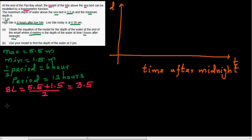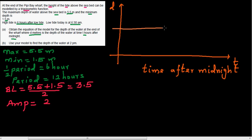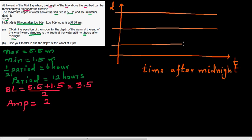The amplitude is the distance from the maximum or minimum to the baseline. The distance from the baseline (3.5) to the maximum (5.5) is 2, and from 1.5 to 3.5 is also 2. So the amplitude is 2. The baseline is at 3.5, the maximum is 5.5, and the minimum is 1.5. The low tide at 6.5 (6:30 am) is plotted here.